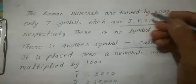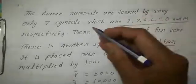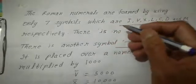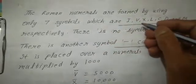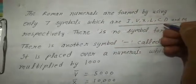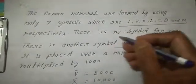The Roman numerals are formed by using only 7 symbols, which are I, V, X, L, C, D, and M respectively.